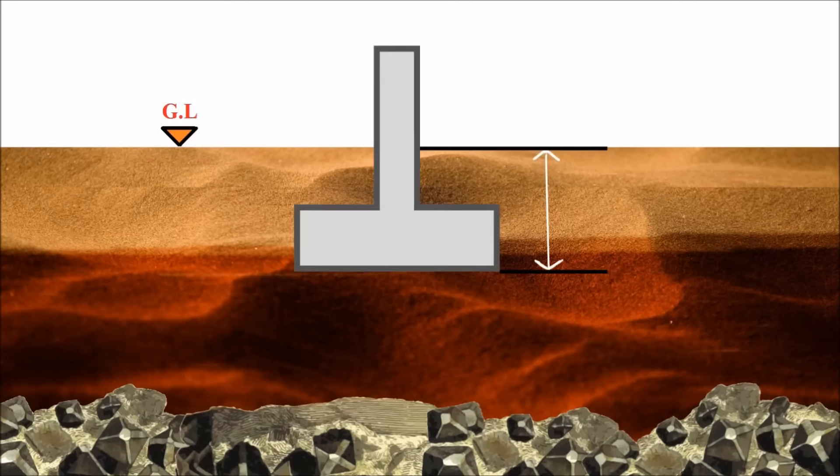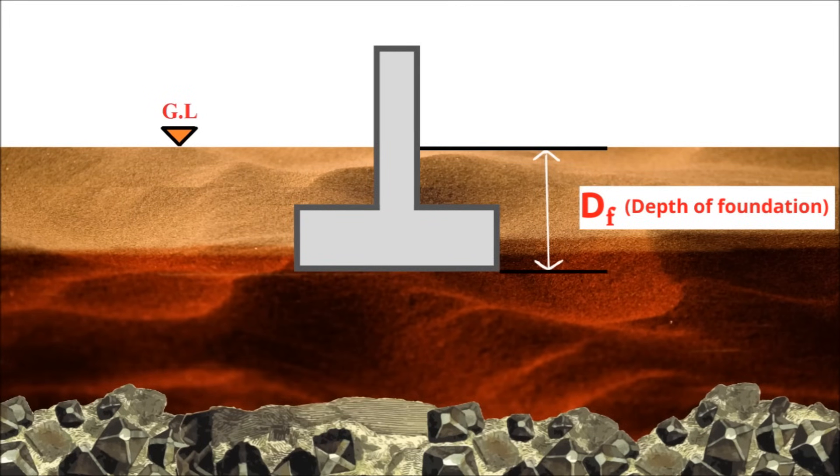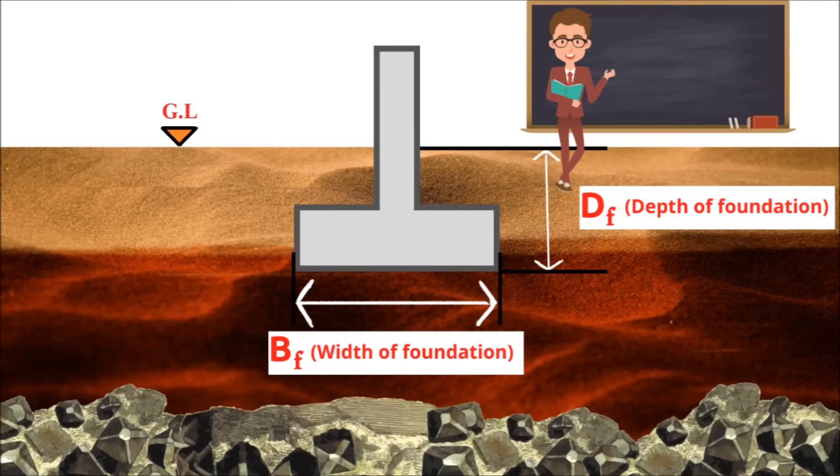When the depth of foundation is equal or less than the width of foundation (df/bf ≤ 1), it is called a shallow foundation, which transfers the loads at shallow depth near the surface of the earth.